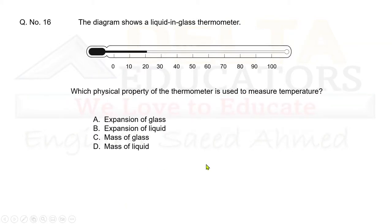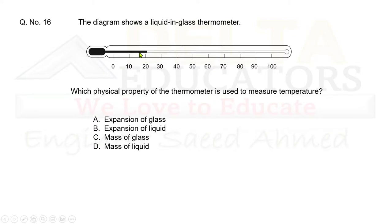Question 16: A liquid-in-glass thermometer measures temperature. Which physical property is used? Option A: expansion of glass. Option B: expansion of liquid. Option C: mass of glass. Option D: mass of liquid. In a glass thermometer, temperature is measured by the expansion of the liquid inside the bulb. Correct option is B.